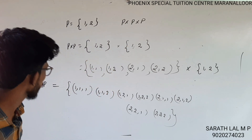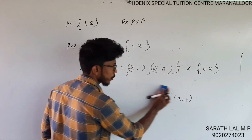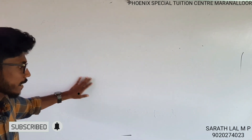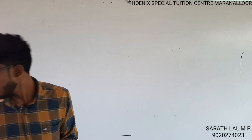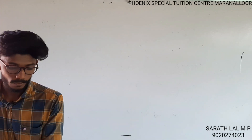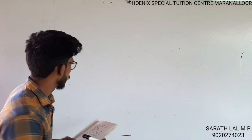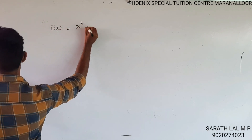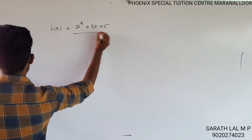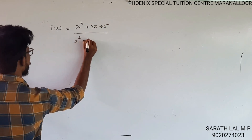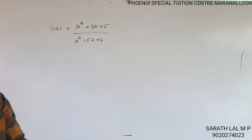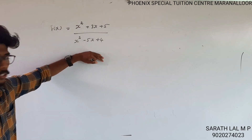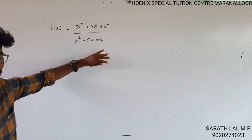Next slide. The previous question is done. There is a type of question. The next type of question is: find the domain. This question is about f of x. f(x) equals x² plus 3x plus 5 divided by x² minus 5x plus 4. The denominator — if you say that domain, you can write the denominator.